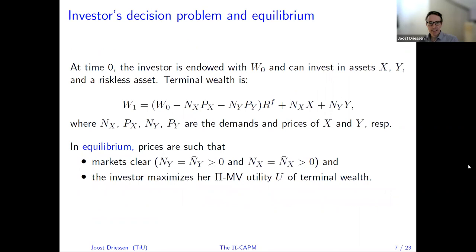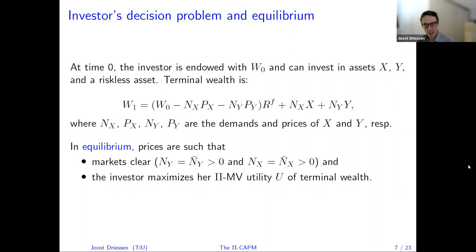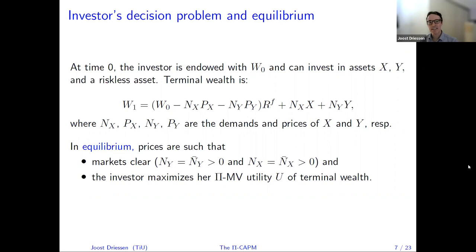The setup is very standard — a one-period model. The investor has wealth at time zero, can invest in the two assets plus a riskless asset, and terminal wealth depends on what you pay today and the payoff at the end of the period. The equilibrium concept is completely analogous to the regular CAPM: markets clear, investors hold the supply, and investors maximize utility of terminal wealth. The innovation comes from the PI-MV utility: investors don't maximize regular mean-variance utility, but instead maximize the PI-MV utility.